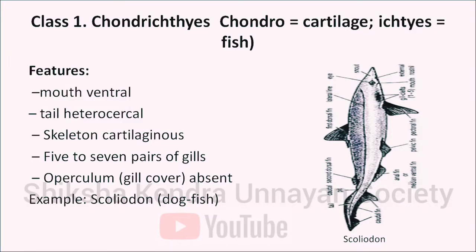Chondrichthyes: chondro means cartilage and ichthyes means fish, so these are cartilaginous fish. The mouth is ventral and the tail is heterocercal — meaning the upper lobe is larger than the lower one, with the vertebral column extending into the upper lobe. Their skeleton is cartilaginous and they have five to seven pairs of gills. Operculum (gill cover) is absent. Example: dogfish or Squaliodon.